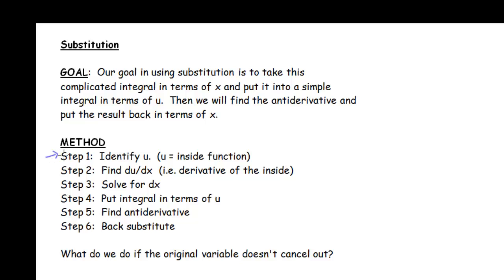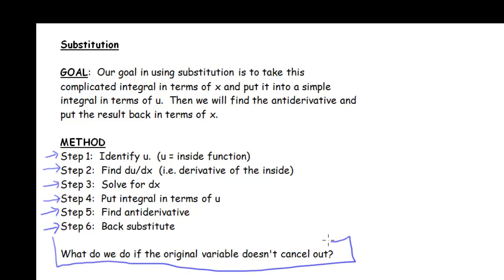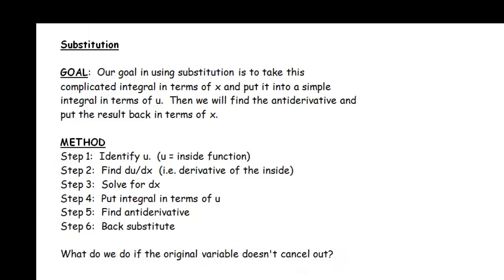Our method was: first we identified u, that was our inside function; then we figured out what our du/dx was, that's the derivative of the inside, so we can identify what part of our function inside the integral is the inside function and what part is the derivative of the inside. We solve for dx, put the integral in terms of u, getting rid of all those x's or t's or z's or whatever the original variable was, find the antiderivative and back substitute. So the question is, what happens if the variable does not cancel out in step 4? Because this can happen. So let's look at an example of what can happen and how we can sometimes solve that problem.